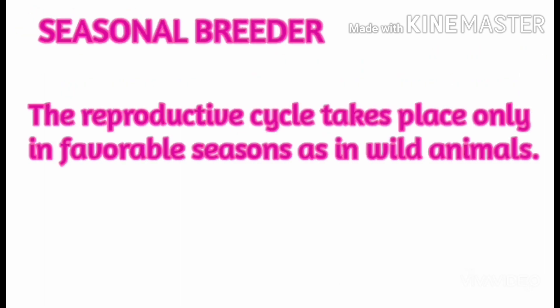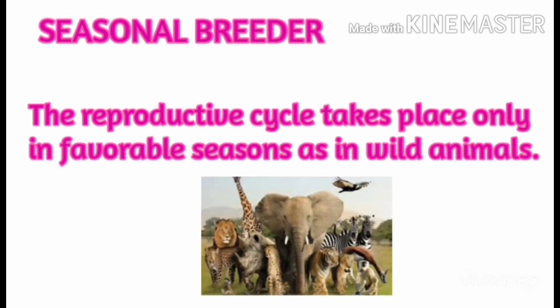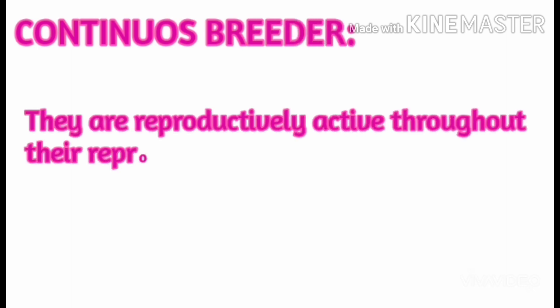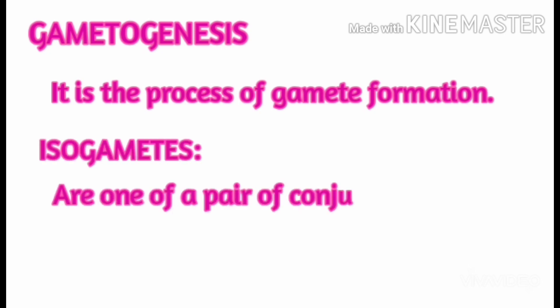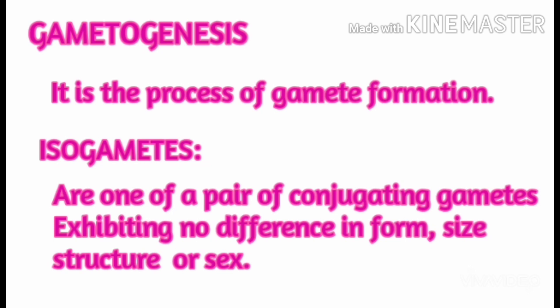Seasonal breeders are those whose reproductive cycle takes place only in favorable seasons, as seen in wild animals. Continuous breeders are reproductively active throughout their reproductive phase. Gametogenesis is the process of gamete formation.